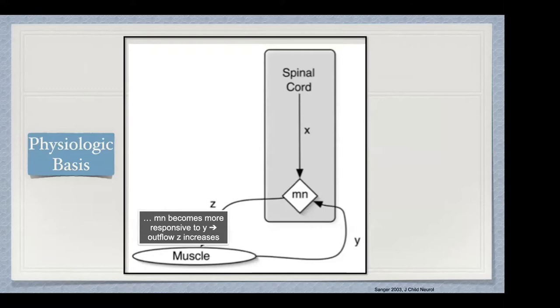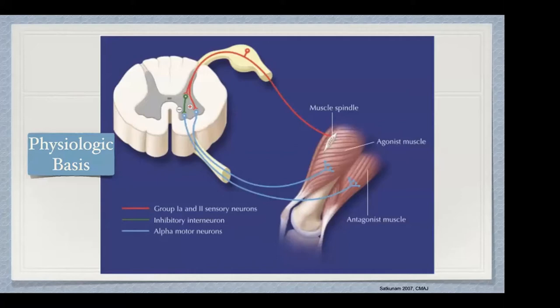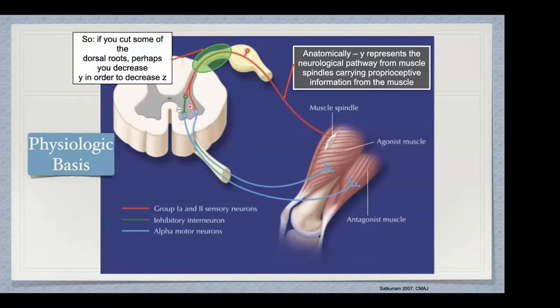This is the basis of the exaggerated motor outflow causing hyperreflexia, clonus, reflex overflow into the upper extremities and even into the head, and a Babinski sign. Y represents the neurologic pathway from muscle spindles carrying proprioceptive information. The idea was: maybe if you cut the dorsal rootlets, you can decrease Y and turn down Z. They initially cut them all, and found that complete deafferentation caused central nervous system remodeling with long-term dystonic consequences. So they stopped doing that — that's why we do some of them and not all of them.